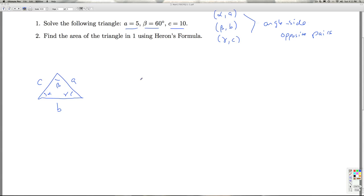So we're told that A is 5, C is 10, we don't know what B is, we don't know alpha, we don't know gamma, but we're told that beta is 60 degrees.